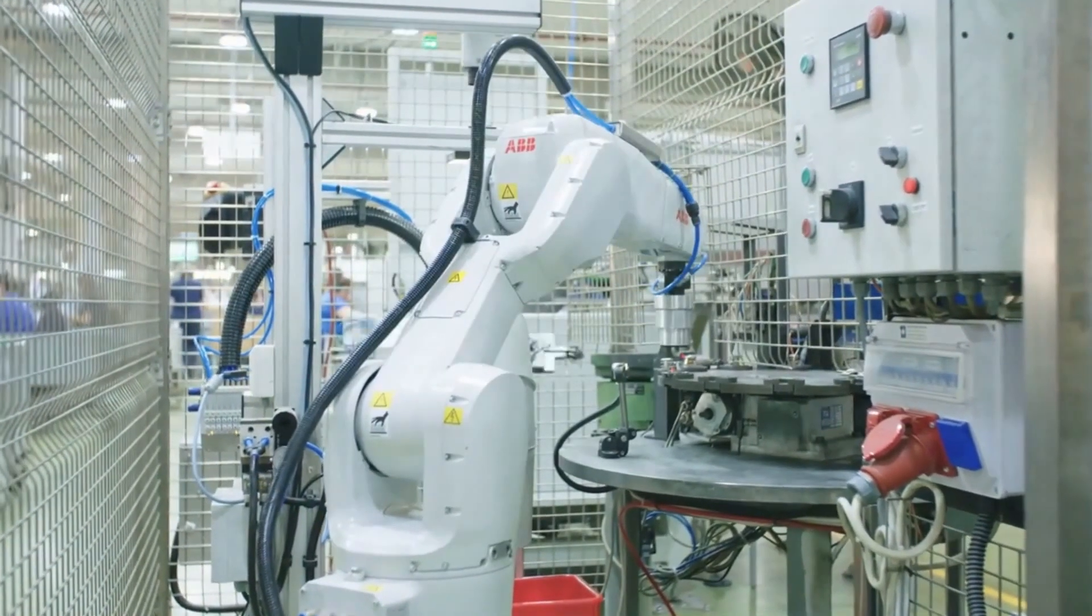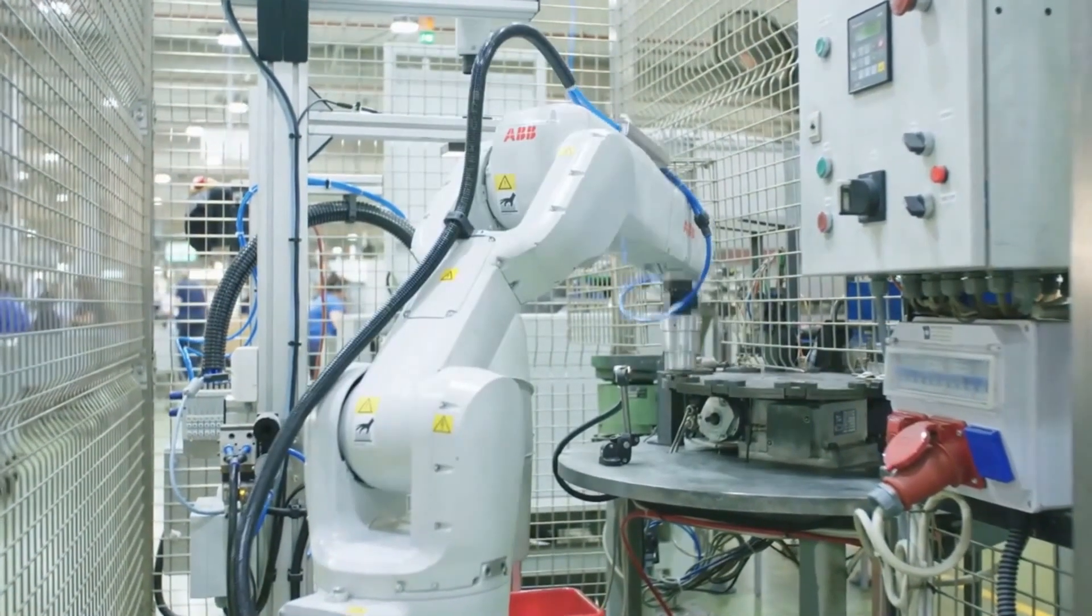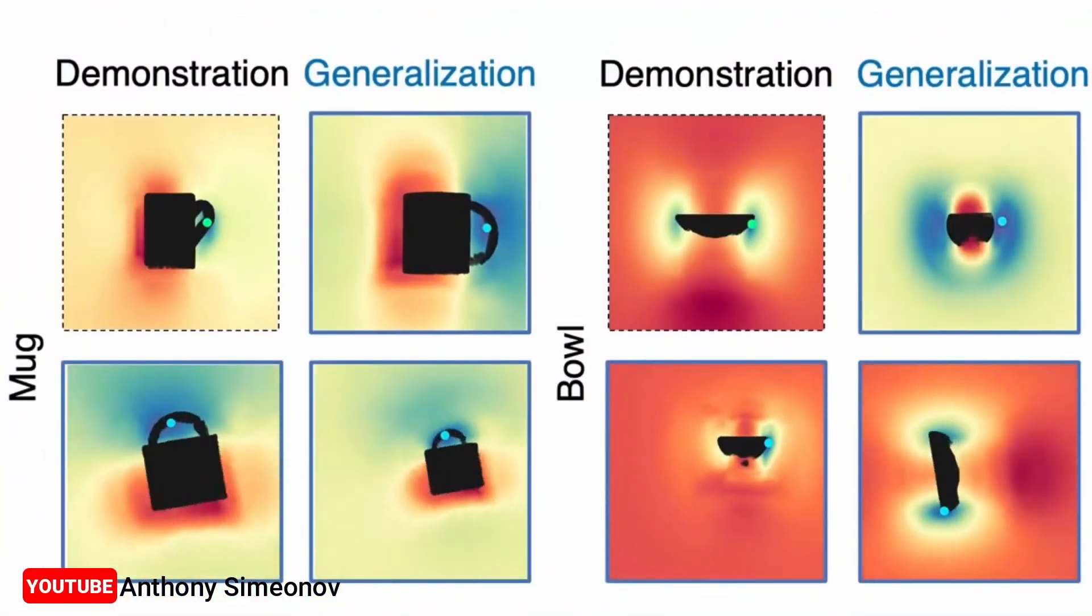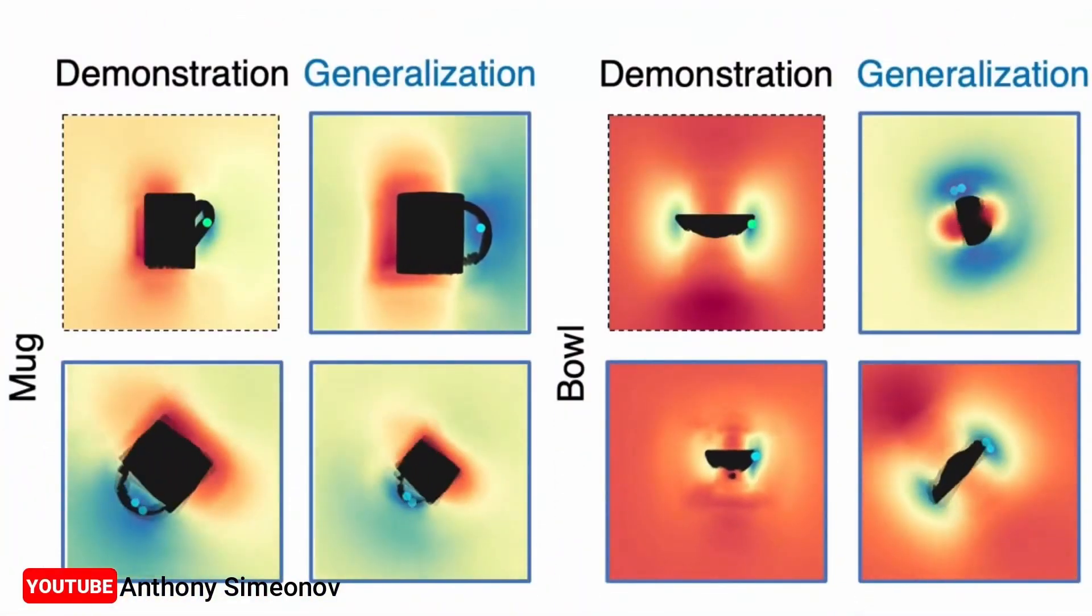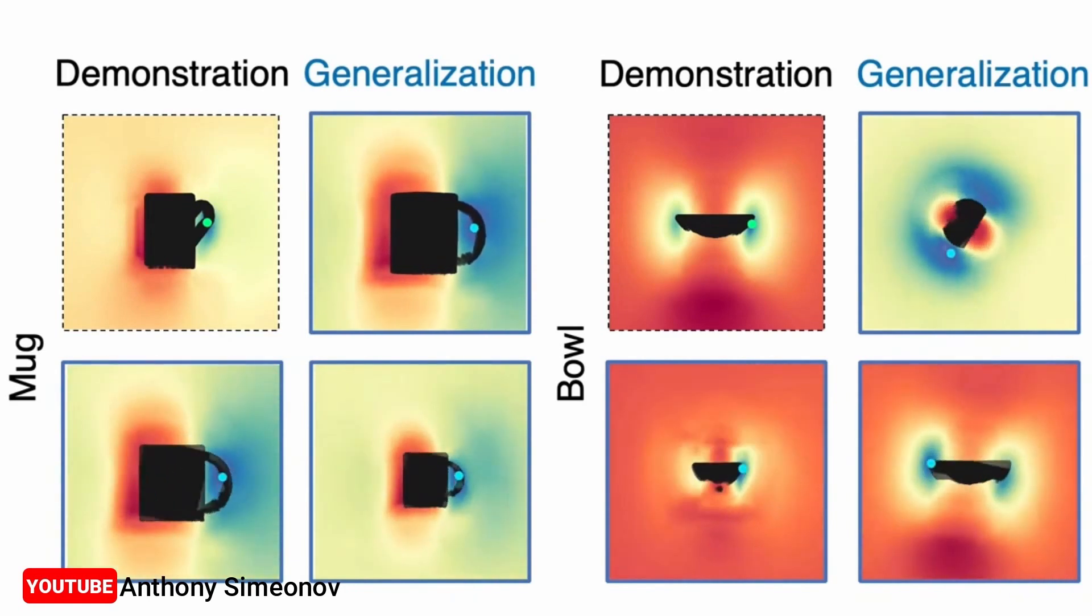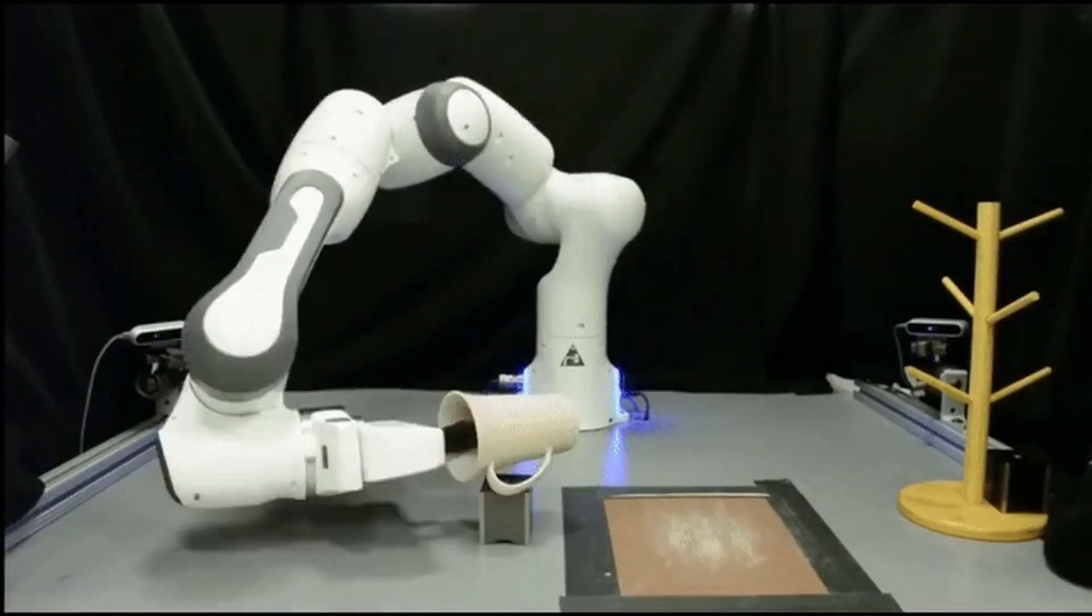The team designed the neural descriptor field with a property known as equivariance. With this property, if the model is shown an image of an upright mug and then shown an image of the same mug on its side, it understands that the second mug is the same object as the first, just rotated.